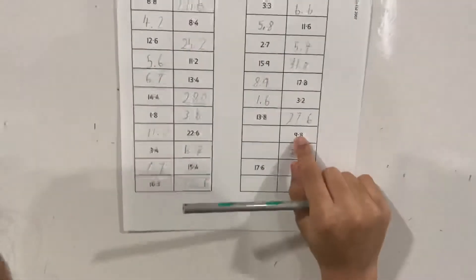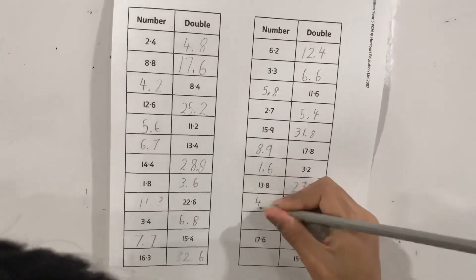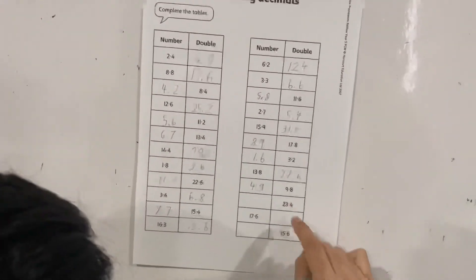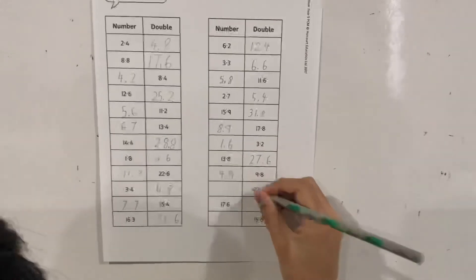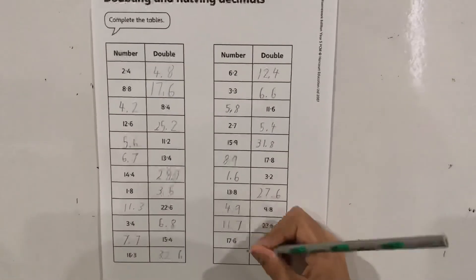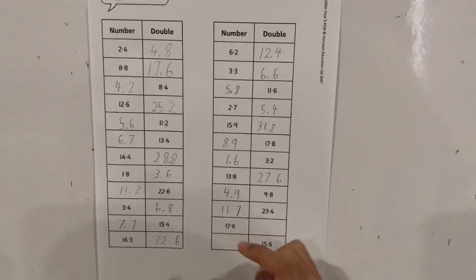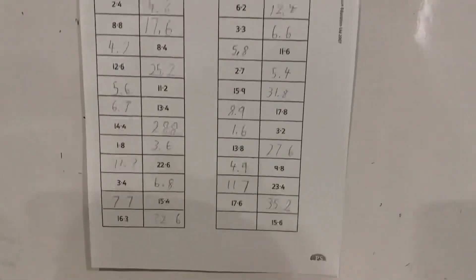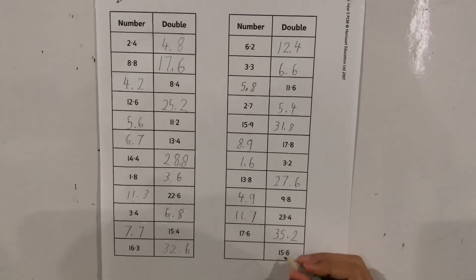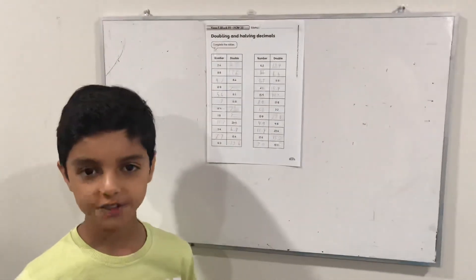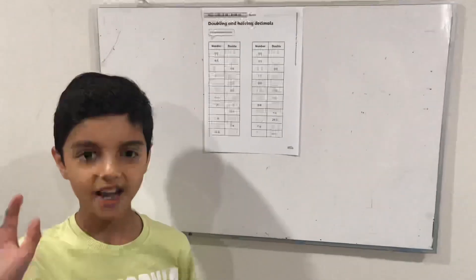9.8 halved is 4.9, and 23.4 halved is 11.7, and 17.6 doubled is 35.2 — that's big! 15.6 halved is 7.8. So how was it? Did you have fun answering the questions with me? Bye, thank you for watching!